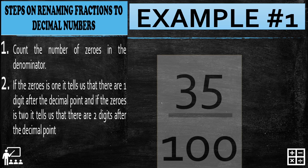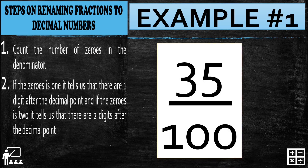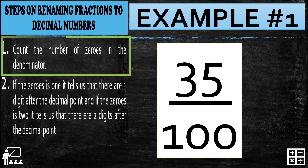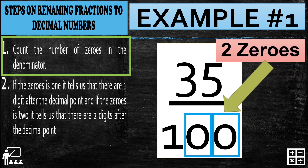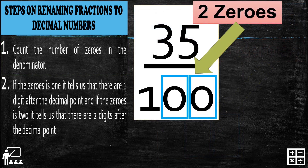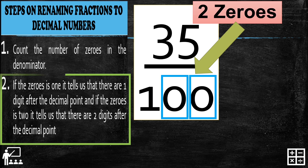Let's try example number one: 35 over 100. First, count the number of zeros in the denominator. In my example, the zeros on the denominator are 1 and 2 — there are two zeros on my example.